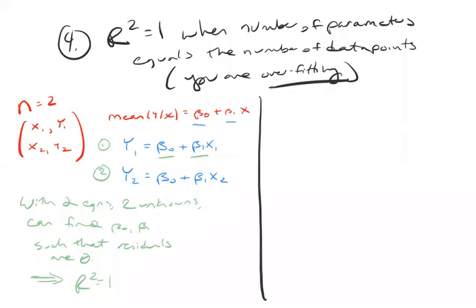This generalizes to more predictors. So suppose I have a dataset with n equal to 3, but suppose now that there's actually two predictor variables.